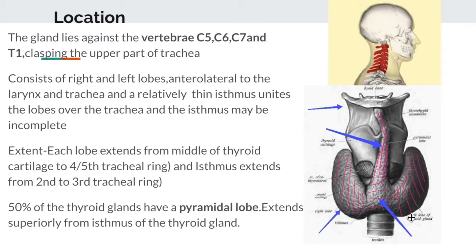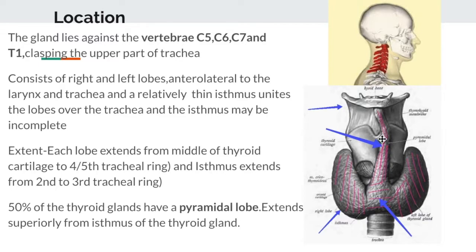Now let's look at the extent of each lobe. The lobes extend from the middle of the thyroid cartilage up to the fourth or fifth tracheal ring, and the isthmus extends from the second to the third tracheal ring. In about 50% of thyroid glands, there is a pyramidal lobe which extends superiorly upward from the isthmus.